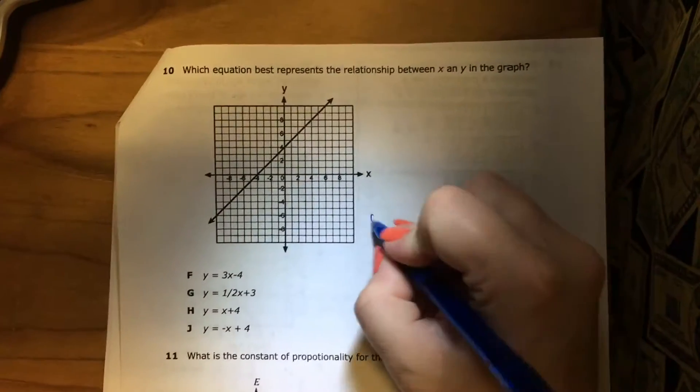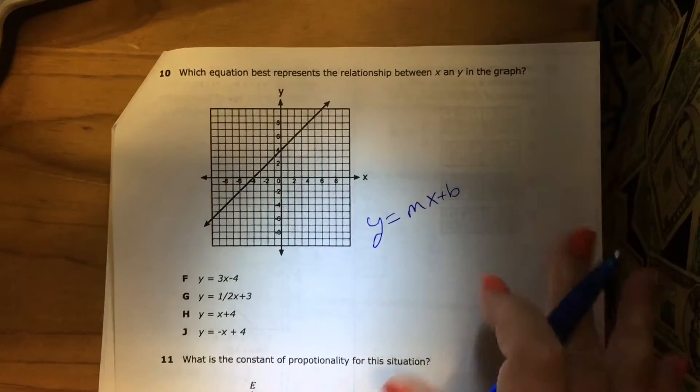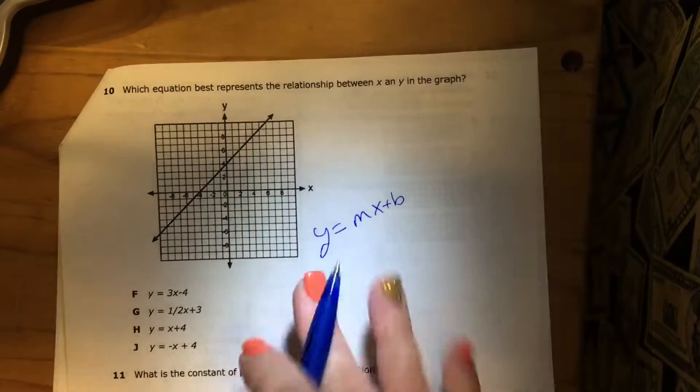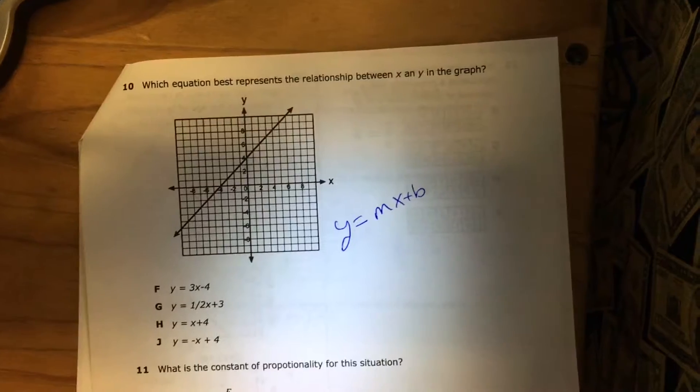Okay, so we have our equation y is equal to mx plus b. B is my y-intercept. That's where I cross my y-axis.